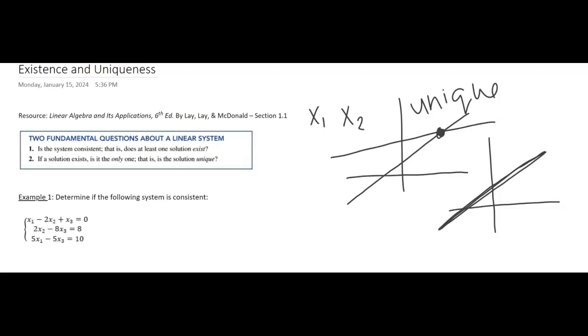Now, if the system is not consistent or inconsistent, so these are both consistent systems. Inconsistent is when we had those parallel lines examples. That's an inconsistent system. No solutions exist.